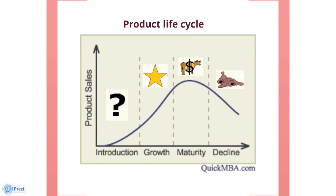The product lifecycle is a business analysis that attempts to identify a set of common stages in the life of commercial products — for example, introduction, promotion, growth, maturity, and decline. As a particular industry matures and its growth slows, all business units become either cash cows or dogs.